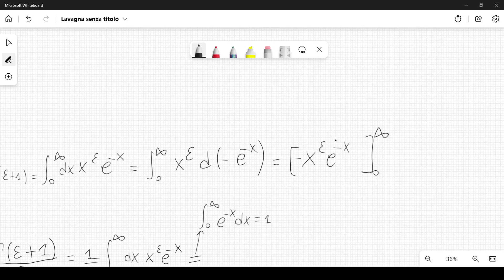We want this term to decay to 0. When x equals infinity, we have no problem because the decaying exponential decays very fast. But when x goes to 0, if we want this term to decay, we need epsilon to be greater than 0.